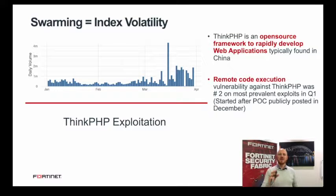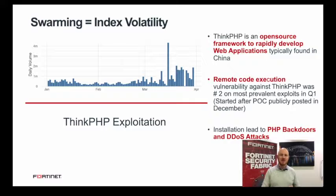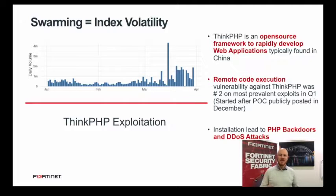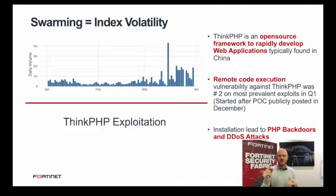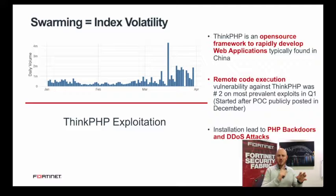When a typical vulnerability is exploited, attackers typically install a PHP backdoor and abuse the system for DDoS attacks, malware distribution, and fueling botnets. Blue Hero is one such botnet observed aggressively leveraging compromised ThinkPHP hosts for crypto mining schemes. This is an example of what was driving the volume and volatility, and it shows how tightly integrated the cyber kill chain is — an increase in vulnerability exploitation typically drives increases in malware and botnet activity as well.